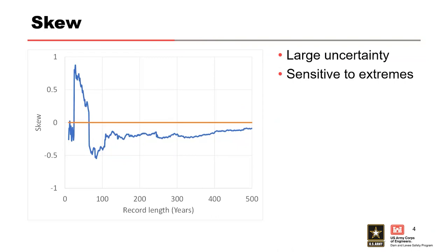That's why SKU is a really important parameter in our flow frequency analysis — small changes in our record can make a big difference. We might think the distribution is one way, and then a low flow or a really high flow can drastically change our SKU. For record lengths less than 100 years, SKU estimates can change rapidly and dramatically because it's very sensitive to extreme events. Since systematic record lengths are never long enough in practice, we need other sources of information — and that is why we use regional SKU information.